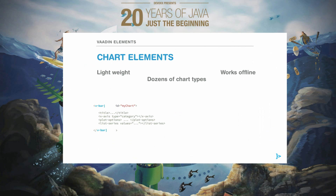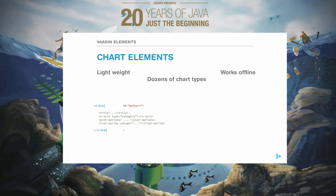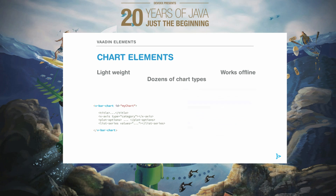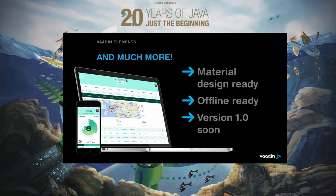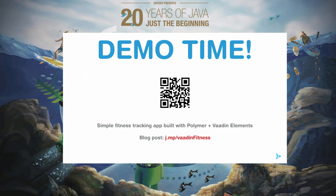We also have chart elements, based on Highcharts — so they are not free to use commercially, but you can plot pretty much any kind of data in chart format. Our elements are based on Polymer, so they adopt material design and they work pretty much offline as well as online. I'm inviting you to check out a demo by my colleague Temo — a nice fitness tracker application that shows how you can use Vaadin Elements and build an application with Polymer side by side with Vaadin Elements.